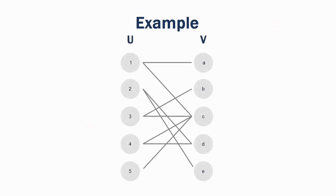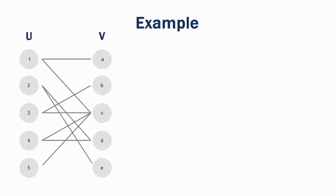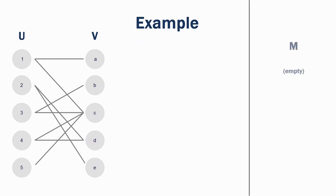Let us take a look at how this works in practice by applying the algorithm to this bipartite graph. We will start our example without any initial matching, but since the algorithm is applied repeatedly to a matching, we can point out that the algorithm works even if an initial matching is supplied. The first step of the algorithm is to go through every unmatched vertex in U, and, using breadth-first search, attempt to reach an unmatched vertex in V.